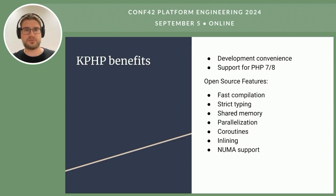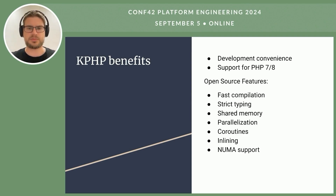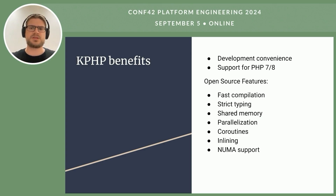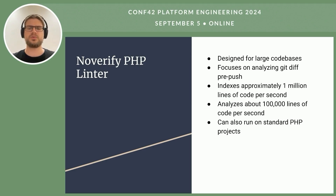KPHP was adopted as the backend of VK. By now it supports PHP 7 and 8 features, making it compatible with modern PHP standards. KPHP allows fast compilation and efficient development cycles. It enforces strict typing to reduce bugs and improve code quality, uses shared memory for efficient management, supports parallelization and coroutines so multiple processes can run simultaneously, and optimizes code through inlining. Then with the NoVerify linter, the team enhanced code quality and reliability. NoVerify is designed for large codebases, indexes around 1 million lines of code per second, analyzes about 100,000 lines per second, and can also run on standard PHP projects.